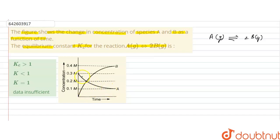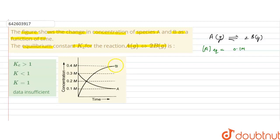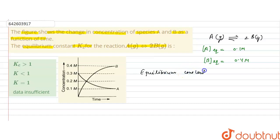From the figure, the equilibrium concentration of A is 0.1 molar — at this point the concentration becomes constant, indicating equilibrium has been attained. Similarly, the concentration of B is constant at 0.4 molar, so the equilibrium concentration of B is 0.4 molar.